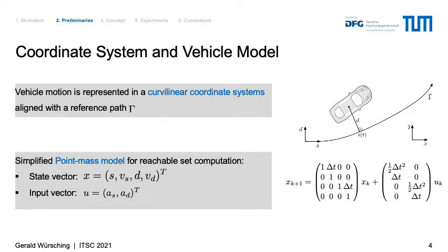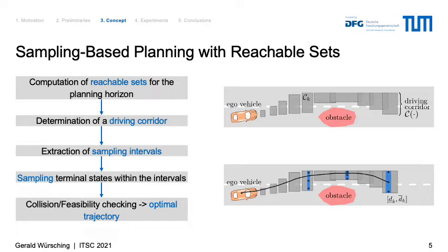This simplified point-mass model is only used for the reachable set computation, basically for computational efficiency. For planning kinematically feasible trajectories, a single-track model is applied later on. To give an overview of our concept using a simple example of a vehicle evading a static obstacle: first, we compute the reachable sets for each time step within the planning horizon, obtaining the collision-free drivable areas for each time step. Afterwards, we determine a driving corridor for this planning cycle, which is the spatiotemporal combination of the reachable sets determined for each time step.